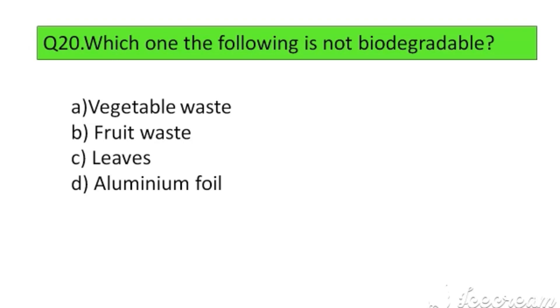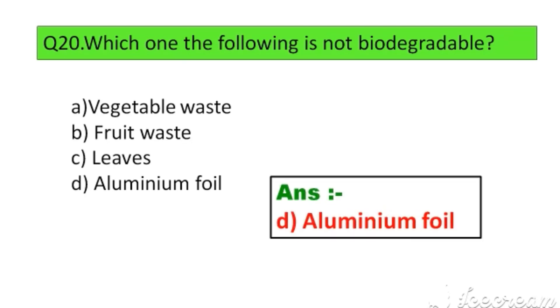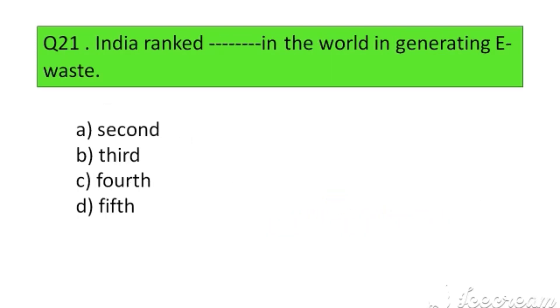Question number 20. Which one of the following is not biodegradable? Option A. Vegetable waste, B. Fruit waste, C. Leaves, D. Aluminium foil. The right answer is Option D: Aluminium foil.